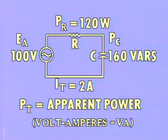Since the apparent power is a combination of real and reactive power, it cannot be designated in either watts or vars. Instead, it is measured in units called volt amperes, abbreviated VA.